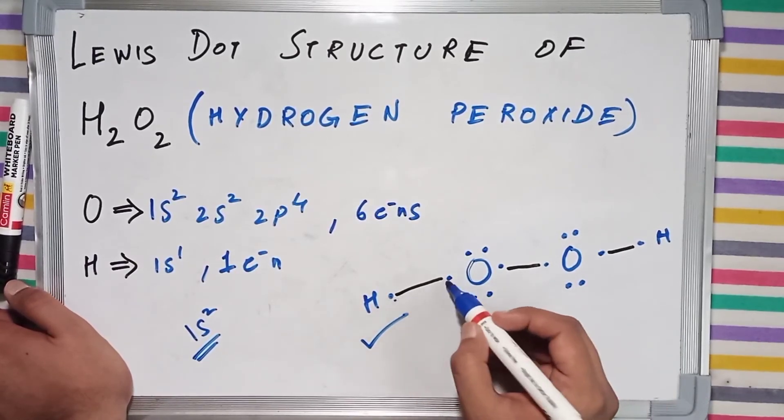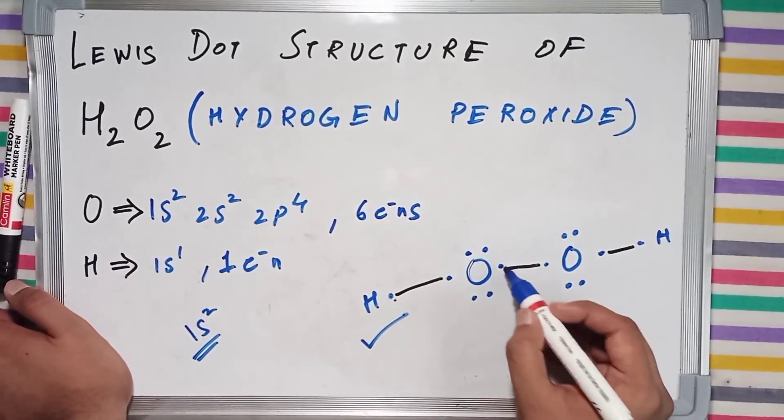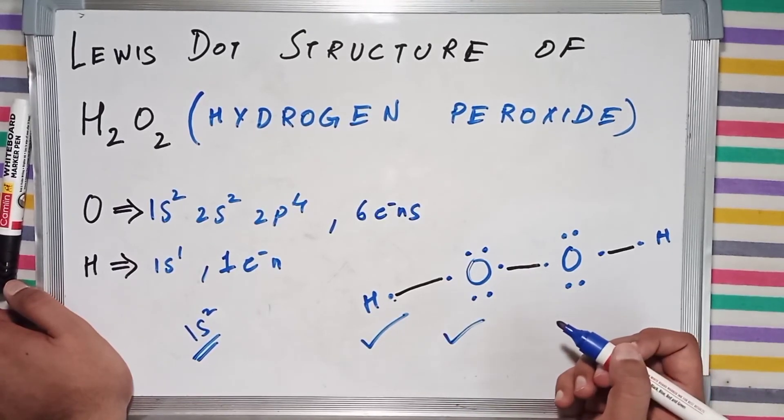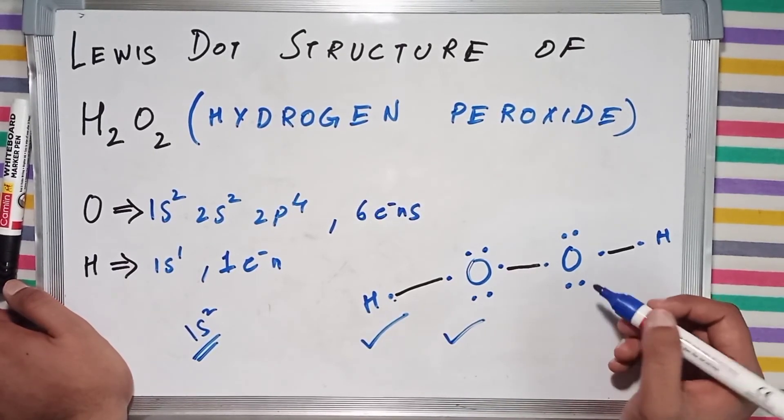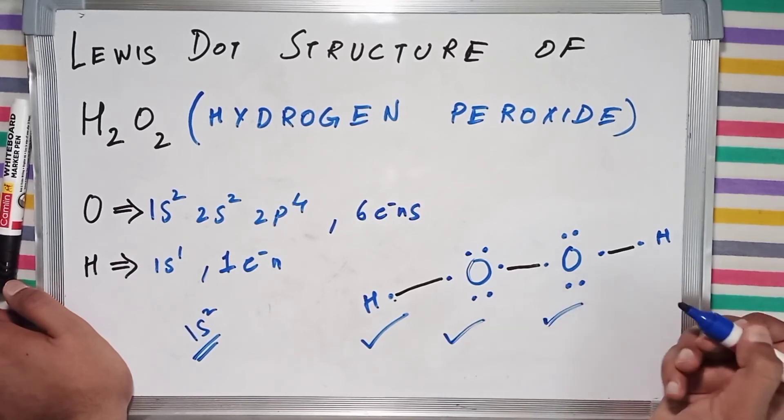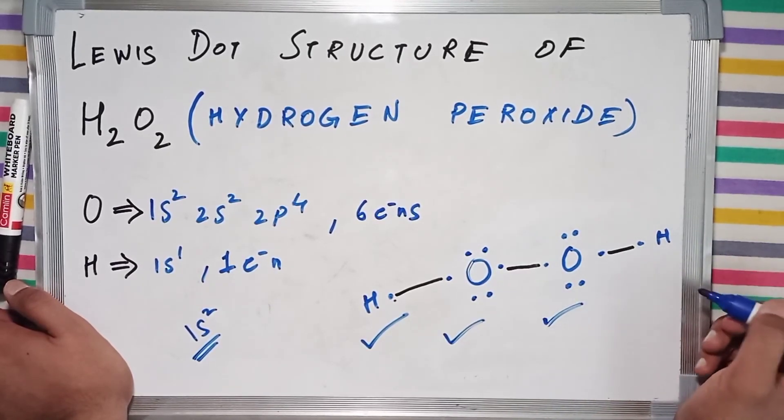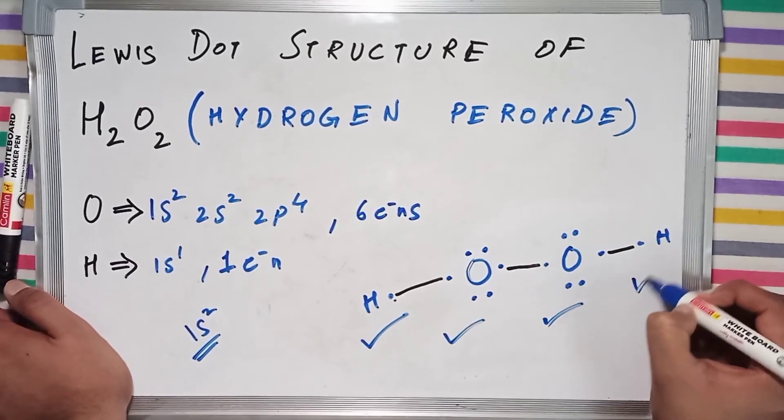Oxygen, let's count: 1, 2, 3, 4, 5, 6, 7, 8. It has also completed its octet. Similarly, this oxygen has also completed its octet, and this hydrogen has also completed its duplet.